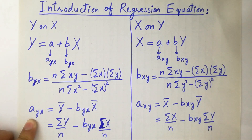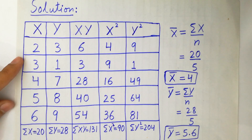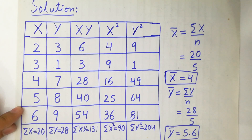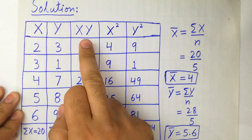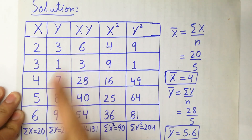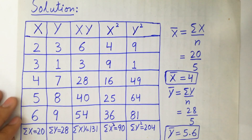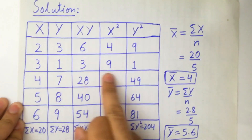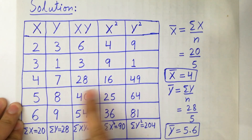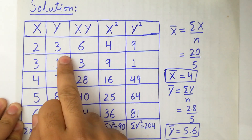Now let's solve the question. Data: x = 2, 3, 4, 5, 6 and y = 3, 1, 7, 8, 9. First calculate xy: 2×3=6, 3×1=3, 4×7=28, 5×8=40, 6×9=54. Next calculate x²: 2²=4, 3²=9, 4²=16, 5²=25, 6²=36.